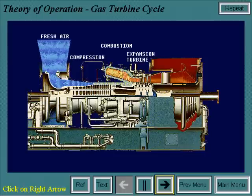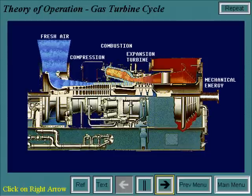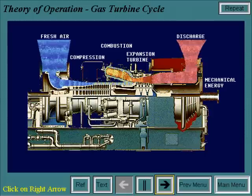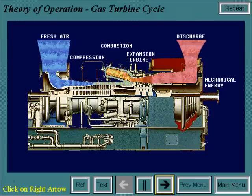This high-pressure, high-temperature air is then sent to an expansion turbine, where the gas energy is converted to the mechanical energy of a rotating shaft.